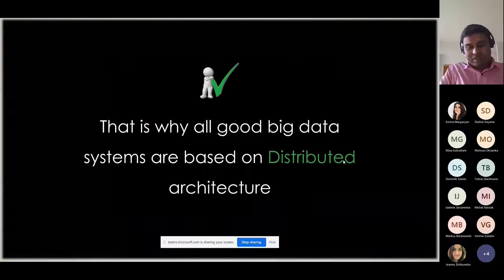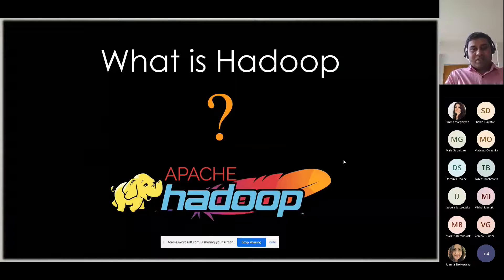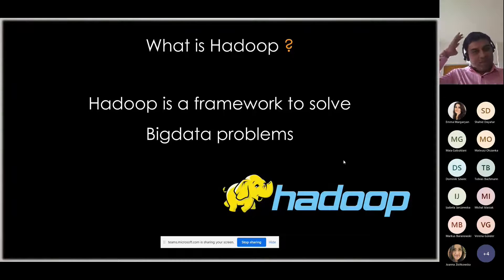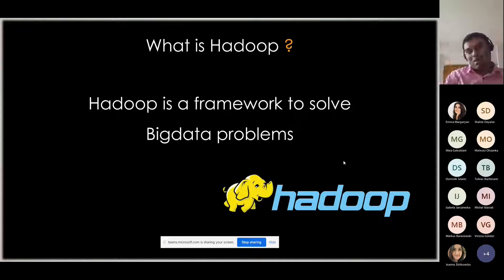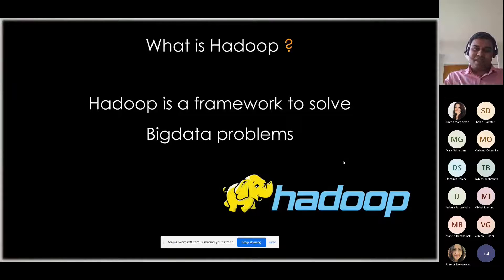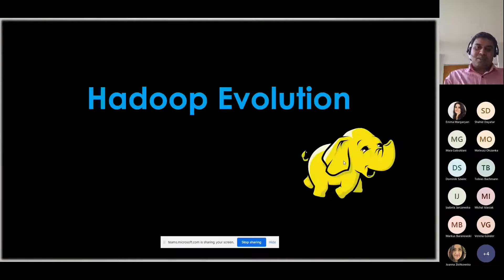Now let's talk about Hadoop. Hadoop is a framework to solve the big data problem. When we have to distribute a big file over a host of network servers and run a map job to achieve some result, this framework was developed. Hadoop is the framework initially introduced to solve such problems. I will talk about the Hadoop evolution so you will understand how Hadoop came into the picture.